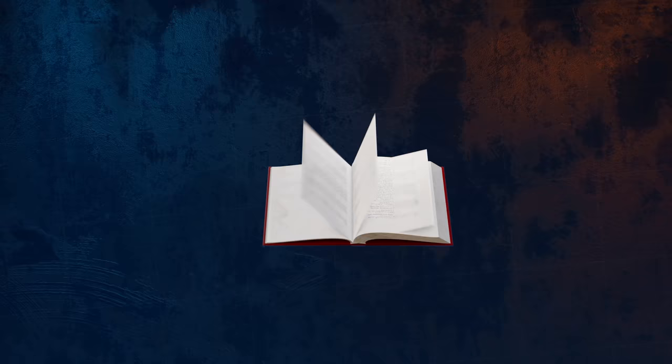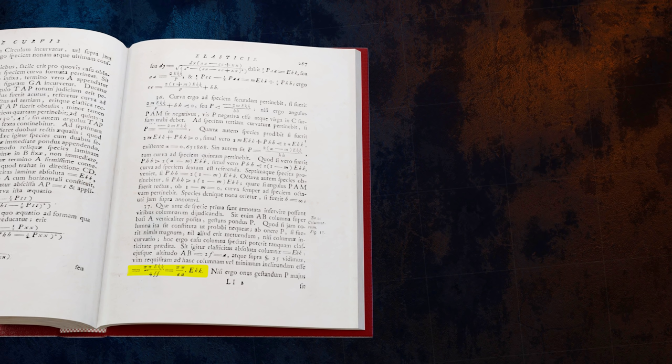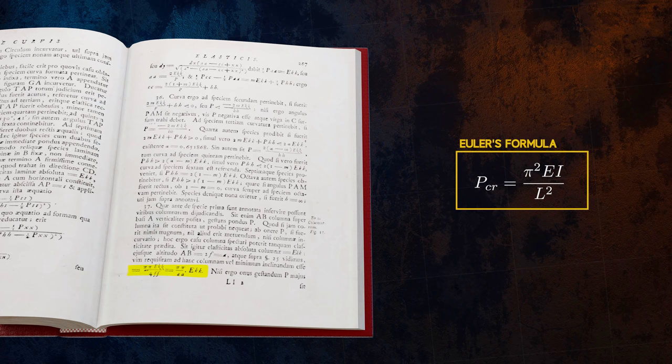To illustrate how this new method could be applied, Euler included in an appendix the derivation of an equation for the axial load that will cause a column to buckle. This is the Euler Buckling Formula, a simple equation that engineers continue to use almost 300 years later to design columns and other members that are loaded in pure compression. It's probably the oldest engineering design equation that's still in regular use.